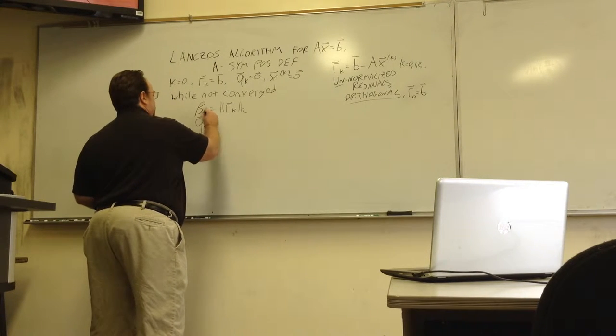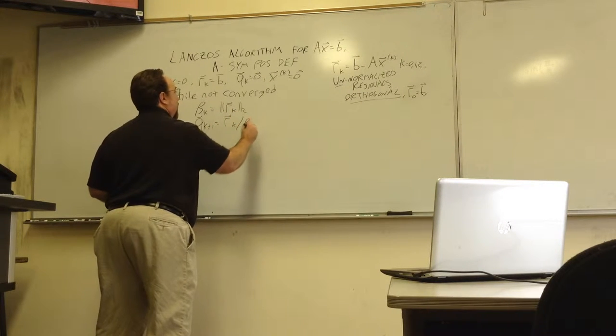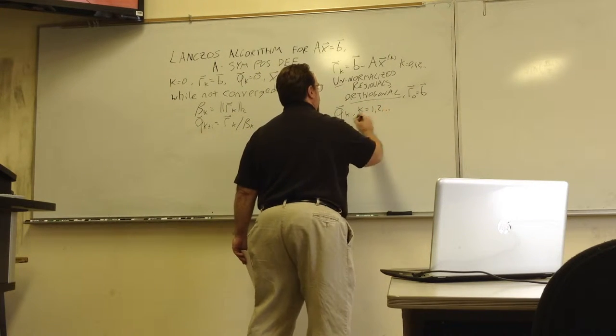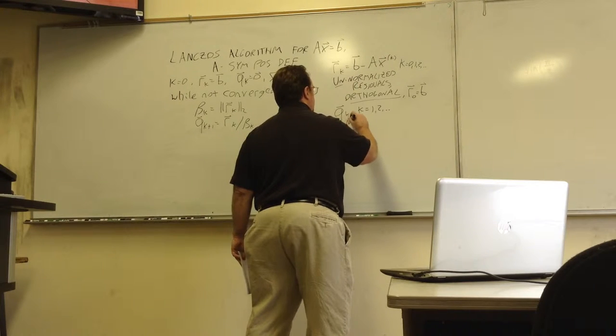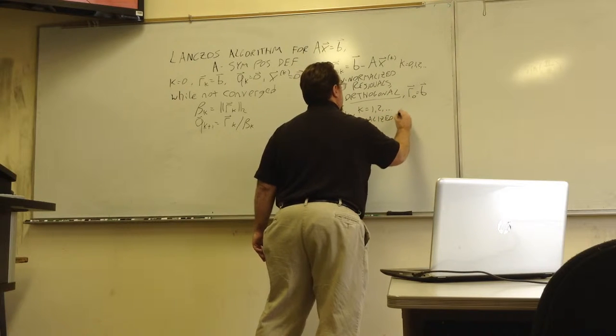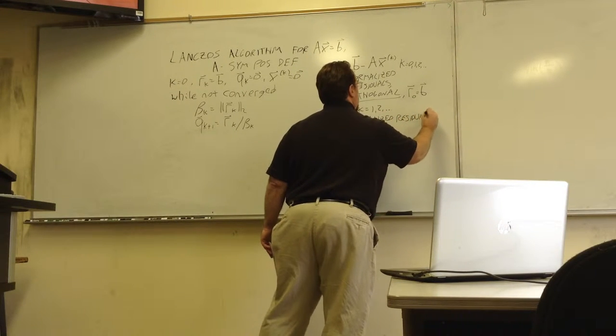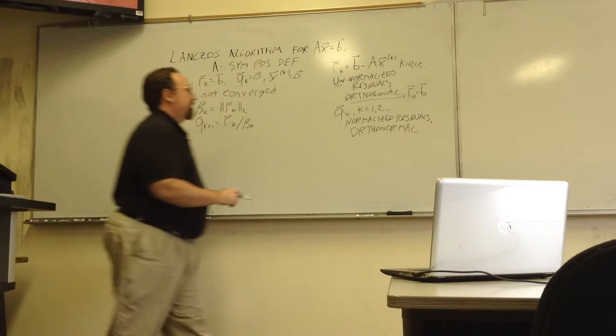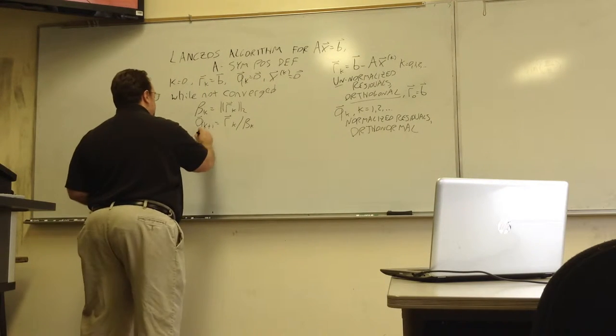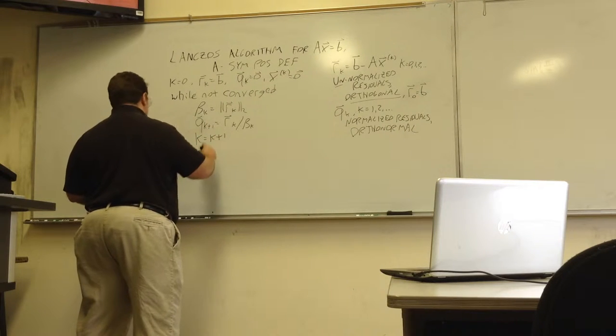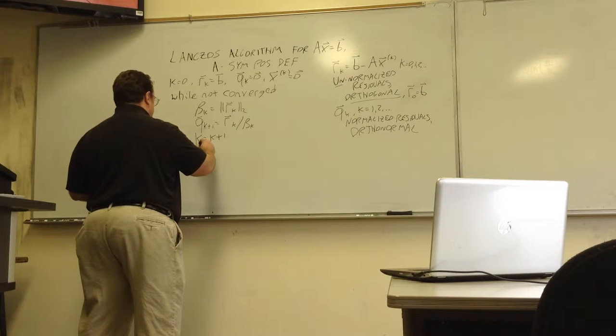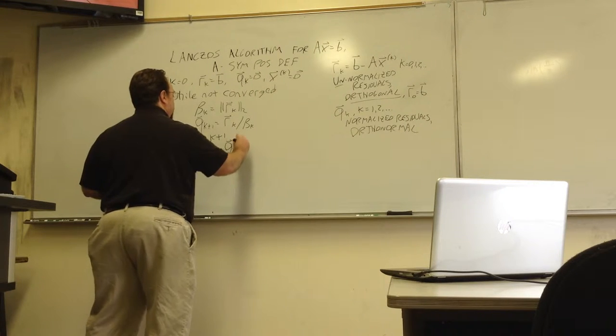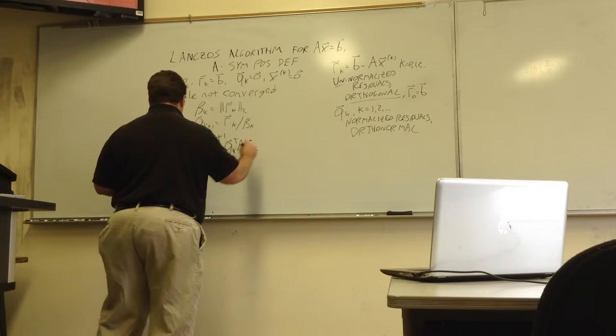The next step, QK plus 1 is RK over beta K. So the QKs, where K starts from 1, are the normalized residuals. So those are orthonormal. Dot products with different ones are zero. Dot product with self is 1. Then we bump K up to the next iteration, and we compute our recursion coefficients, our alphas, which is QK transpose AQK.